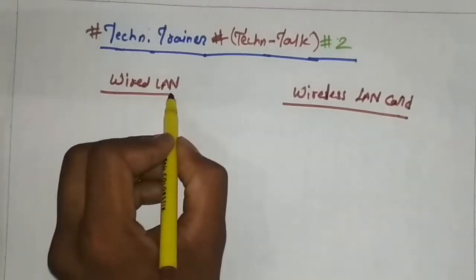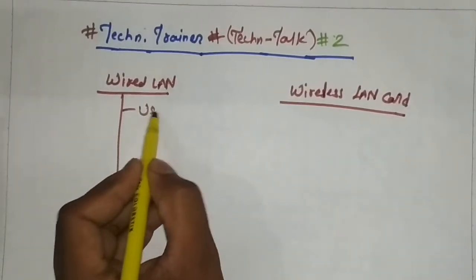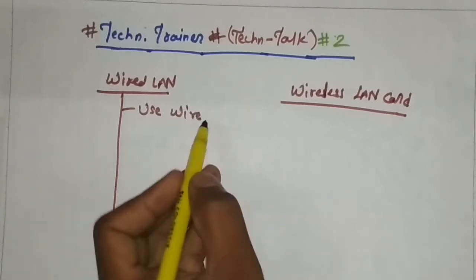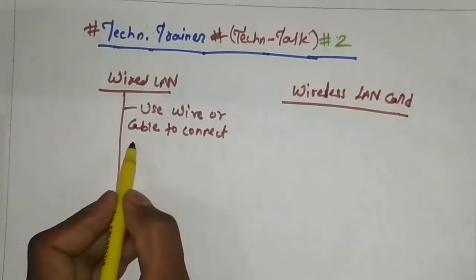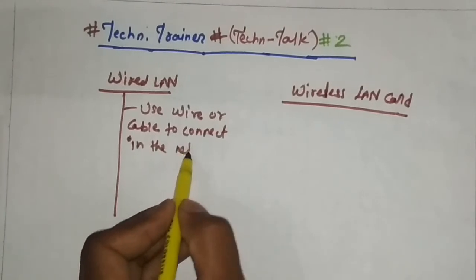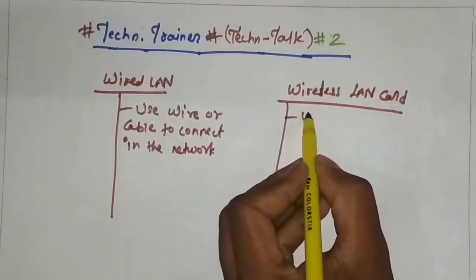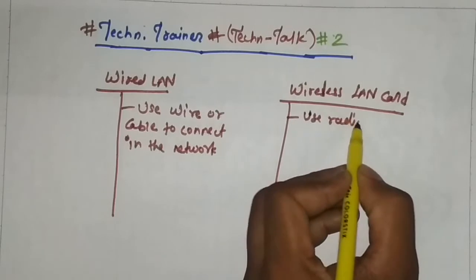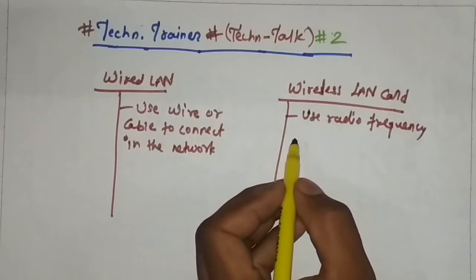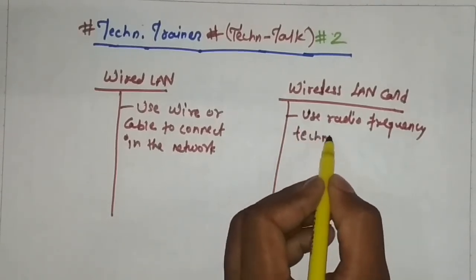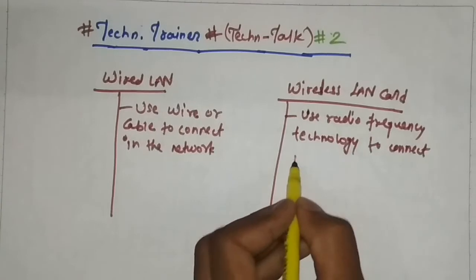Now we discuss some of the differences. The wired LAN card uses wire or cable to connect in the network, and on the other hand the wireless LAN card uses radio frequency technology to connect in the network.